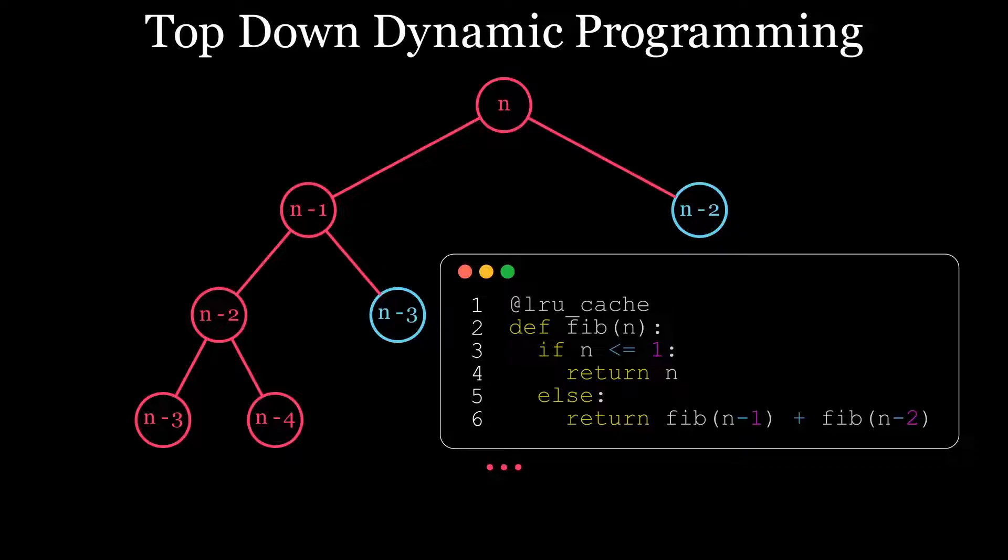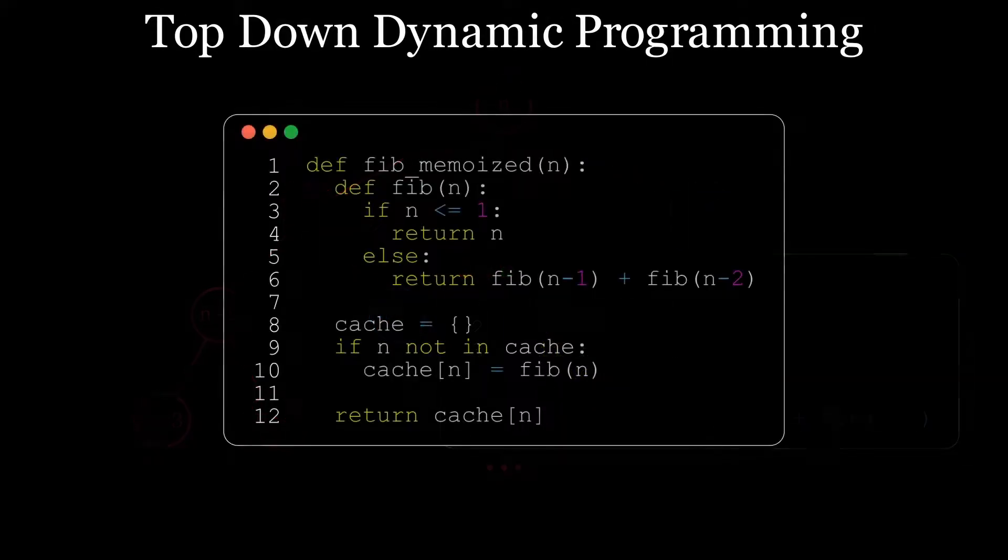It's called top-down dynamic programming because we start at the root of the tree, the highest number n, and we work our way down the tree to the smaller subproblems. Without access to a caching decorator, this would be implemented manually with a hash map. If the value for n is in the hash map, then we can return that value and short circuit. Otherwise, we run the fib function as normal and store its value for next time.